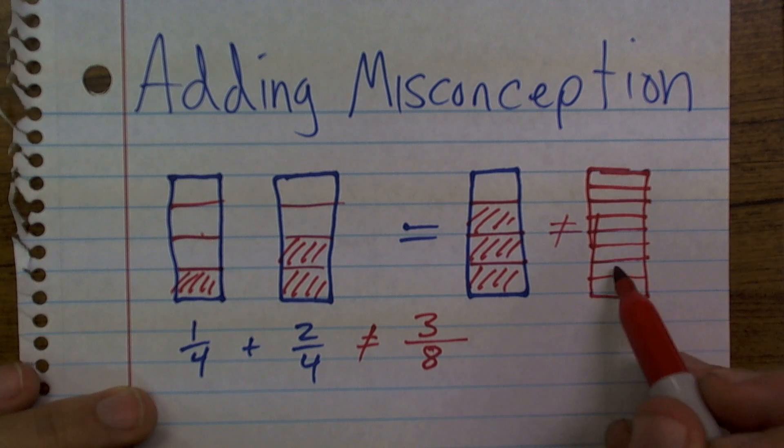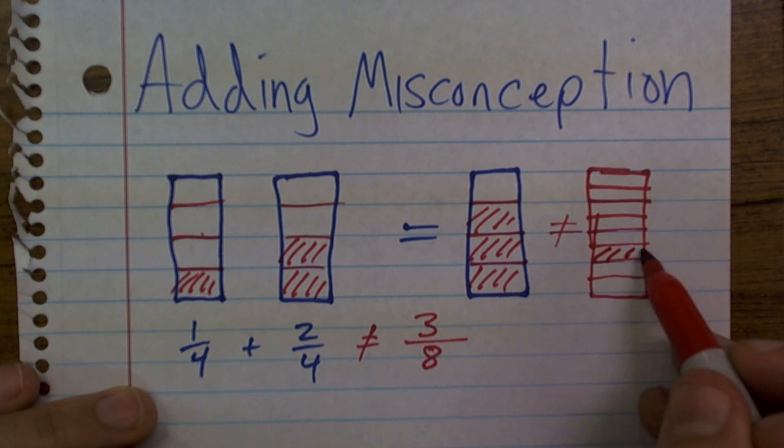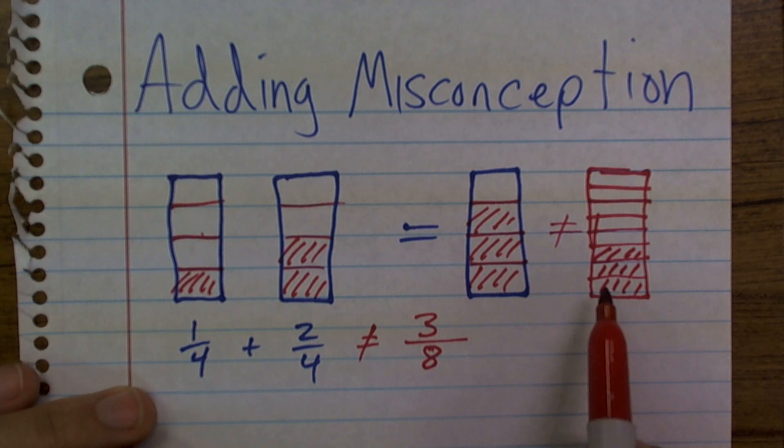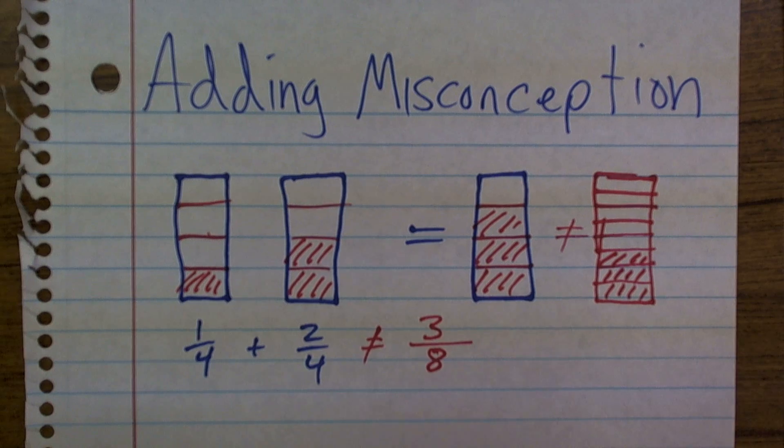So you can see now I've broken my same whole into eight different sections. Well, if I was going to say three out of eight, that's going to be that big. And obviously you can see that these two fractions are not going to be similar. So be very careful when you're adding fractions.